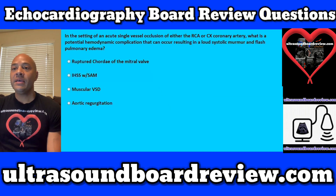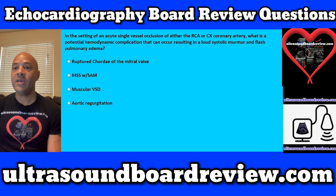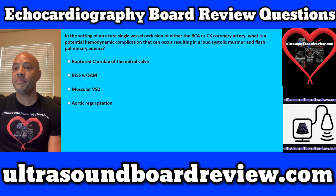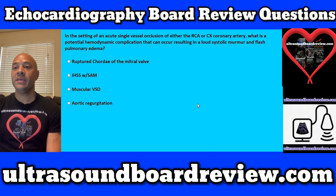Question 38. In the setting of an acute single vessel occlusion of either the RCA or the circumflex coronary artery, what is the potential hemodynamic complication that can occur resulting in a loud systolic murmur and flash pulmonary edema? Is it A, ruptured chorda of the mitral valve; B, idiopathic hypertrophic subaortic stenosis with SAM; C, muscular VSD; or D, aortic regurgitation? The answer is B, idiopathic hypertrophic subaortic stenosis with SAM.